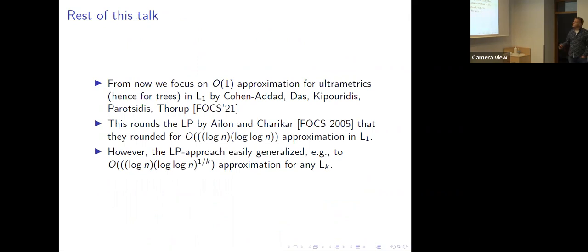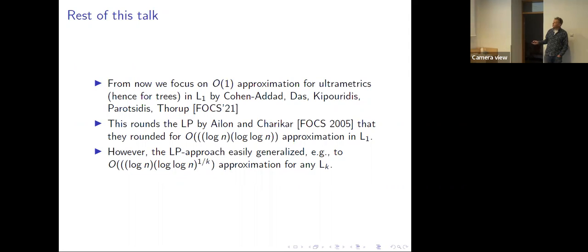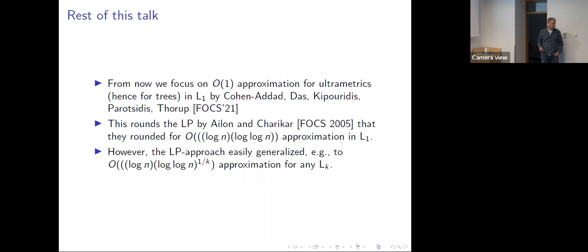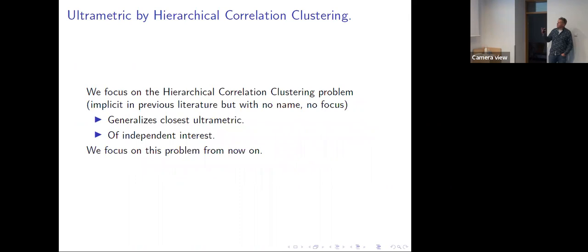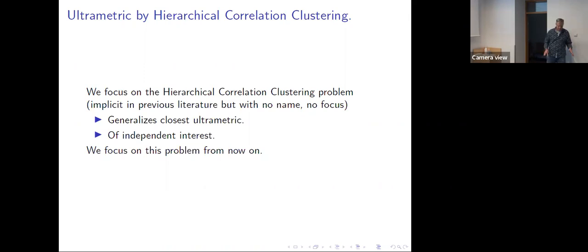Now I want to focus on the constant approximation for L1. It's actually rounding the same LP that Ailon and Charikar had — we just rounded it a lot better. So we actually show that the integrality gap is constant. But what we do works only for L1 and nothing else. In fact I'm going to change problem again — started with trees, then ultrametrics, and now I'll work on the hierarchical correlation clustering problem. It's been implicit and an LP has even been given for it, but nobody really focused on it before.